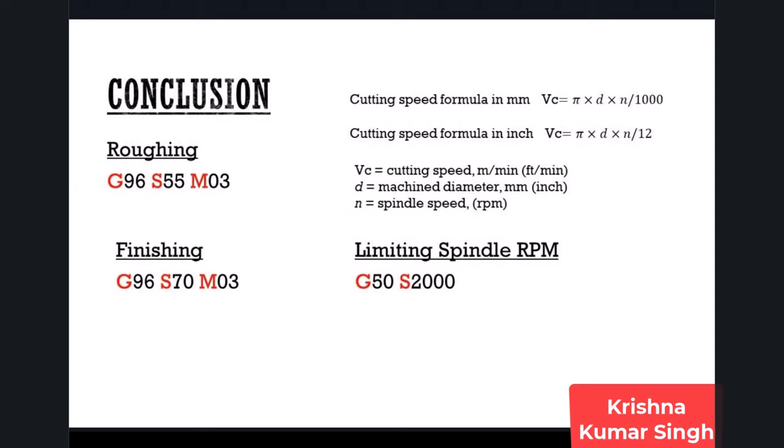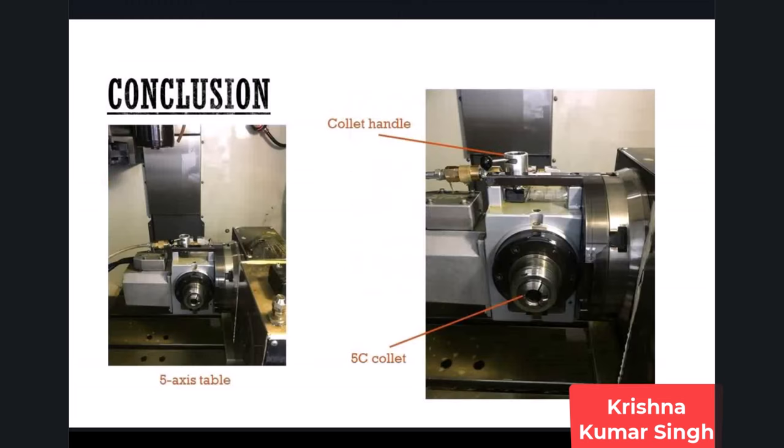Now the lathe operation is complete. We can move the part from the lathe machine to the milling machine to finish the back side of the part. For our milling operation, we will use a 5-axis table.